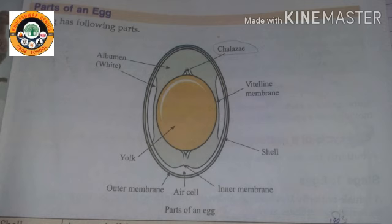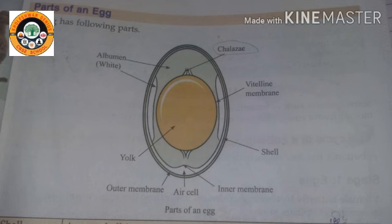Last, we look at yolk. The yolk contains less water and more protein than the egg white, some fat, and most of the vitamins and minerals of the egg. Yolk mein water kam aur protein zyada hota hai. Jo yellow color ka beech ka avaran hota hai use hum yolk kehte hain. Yolk color ranges from faint yellow to deep orange according to the breed of the hen.